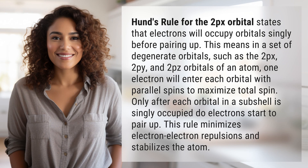Hund's rule for the 2px orbital states that electrons will occupy orbitals singly before pairing up. This means in a set of degenerate orbitals, such as the 2px, 2py, and 2pz orbitals of an atom,